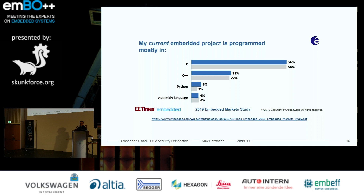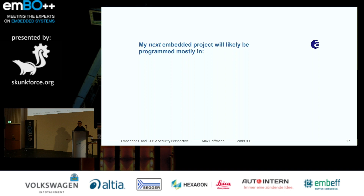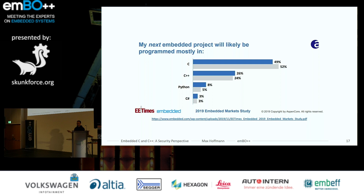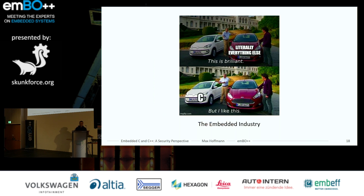There was a great survey by Aspen Core — a 100-page document — where they asked embedded programmers several questions, including: is your current embedded project programmed mostly in C and C++? Given all the evidence from the CWEs and security issues, you'd expect that programmers' next projects would shift to safer languages. But what we see is that it doesn't change at all. The embedded industry stays with C and C++ and all the issues those languages bring.